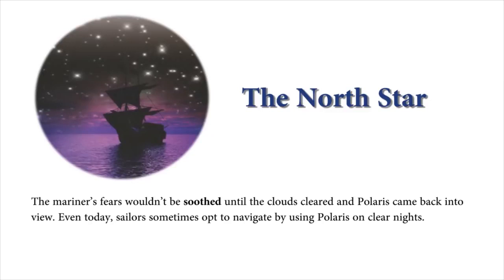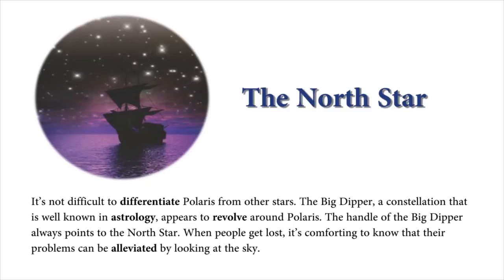Even today, sailors sometimes opt to navigate by using Polaris on clear nights. It's not difficult to differentiate Polaris from other stars. The Big Dipper, a constellation that is well-known in astrology, appears to revolve around Polaris. The handle of the Big Dipper always points to the North Star. When people get lost, it's comforting to know that their problems can be alleviated by looking at the sky.